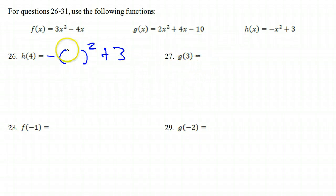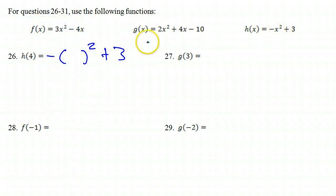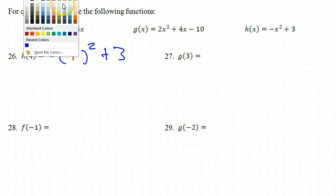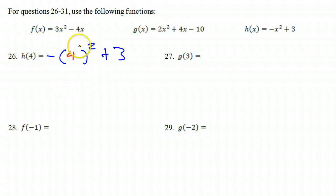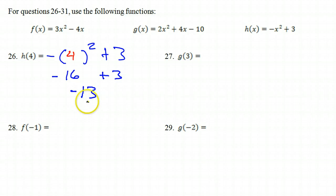Anytime I'm going to substitute for a variable, I always start by writing the function with parentheses in place of the variable. You should do the same. So if I want to evaluate at 4, I put a 4 in there. I have to realize that I'm going to square this first — 4 squared. It's really not negative 4 squared, it's just 4 squared. And 4 squared is 16. The negative sign just comes right down, so I've got negative 16 plus 3. That's going to be negative 13.